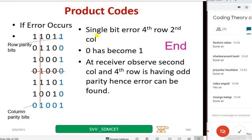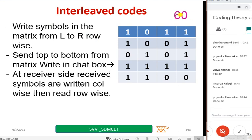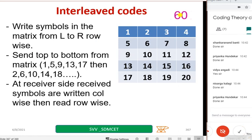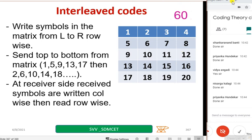Now let us go to interleave codes. The concept is very simple: whatever zeros and ones you want to transmit, write them left-to-right in matrix form. When sending, instead of sending row by row, send them top to bottom — column by column. At the receiver, instead of writing column-wise, write row-wise and read the data row-wise. This is the basic concept of interleaving. There are many techniques but we will only discuss this one.